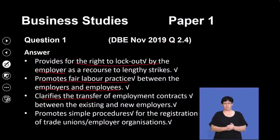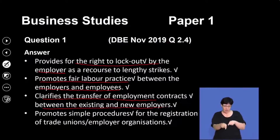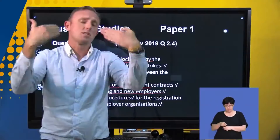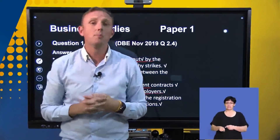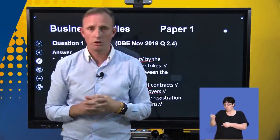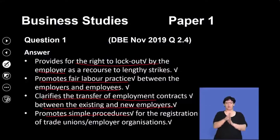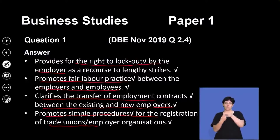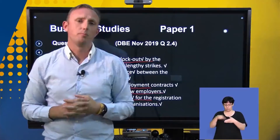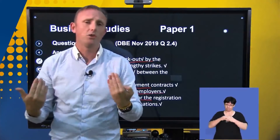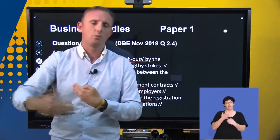It clarifies and transfers employment contracts between existing and new employees — stating what the minimum requirement should be for an employee's contract. And it promotes simple procedures for the registration of trade unions. So if a group of employees would like to start a trade union, it allows them to do that.